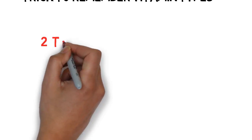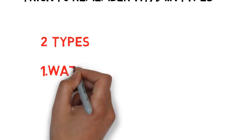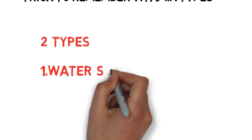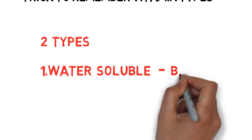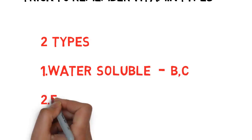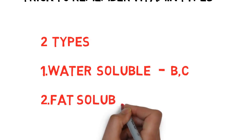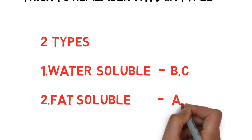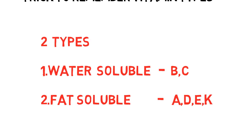There are total six vitamins and they are divided into two types. The first type is water soluble — water soluble vitamins are B and C. The next type is fat soluble — fat soluble vitamins are A, D, E, K.